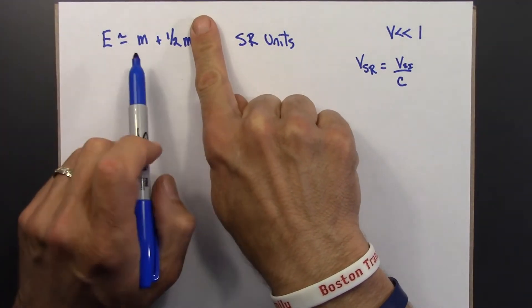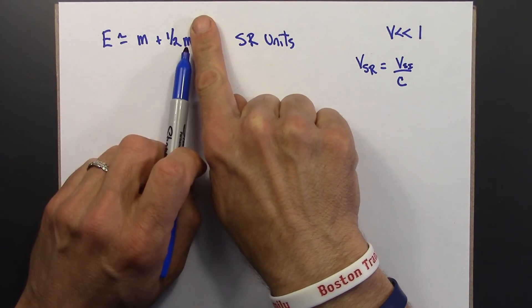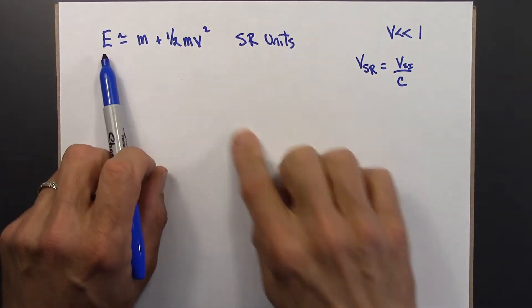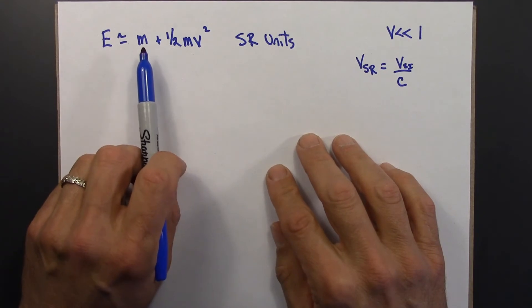So for units here, this is kilograms and this is kilograms. So in SR units, energy is measured in mass units, in kilograms.